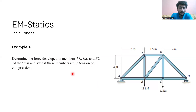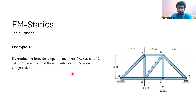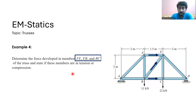This is Example 4. In this example, we have to find the forces in the members FE, BE, and BC, and we have also to state whether the members are in tension or in compression. You can see this is member FE, this is member BC, and this is member BE.